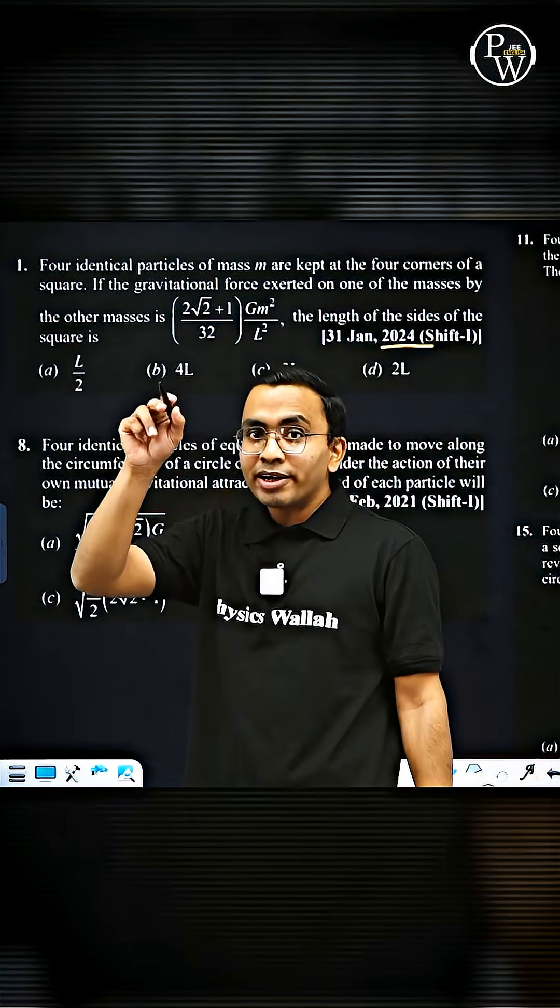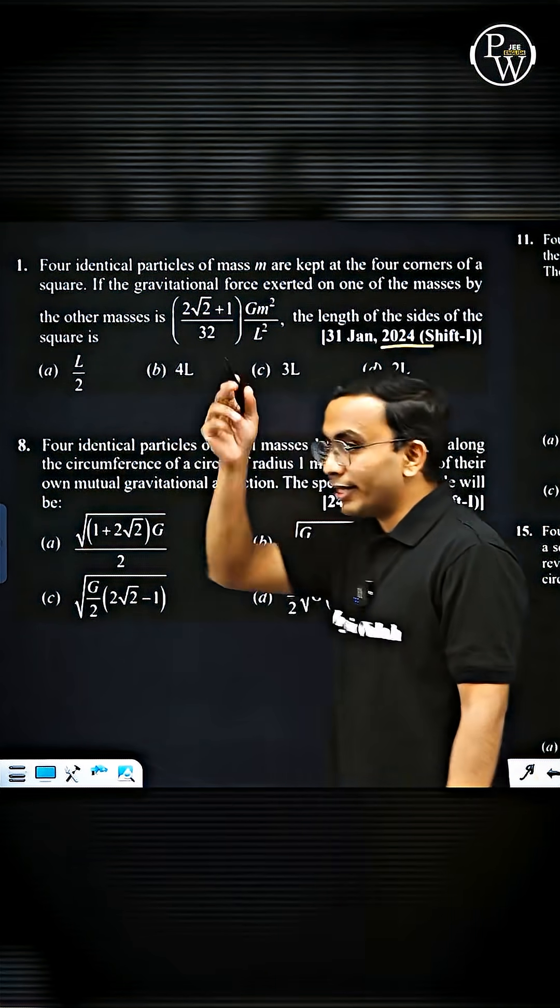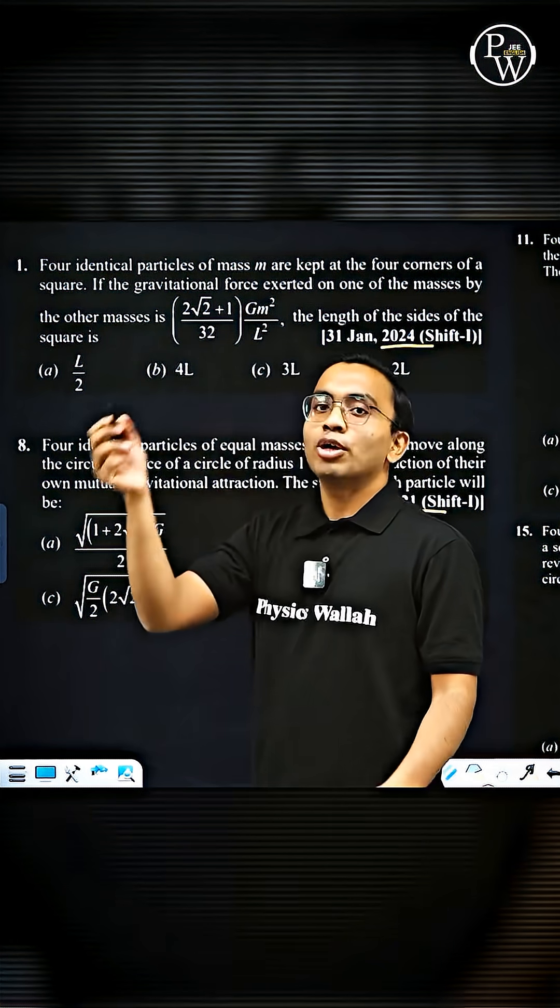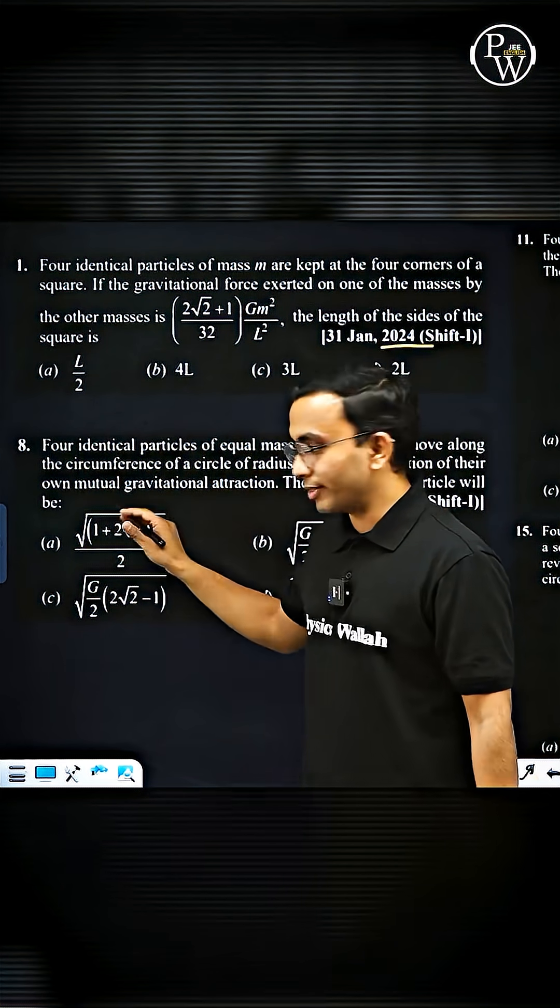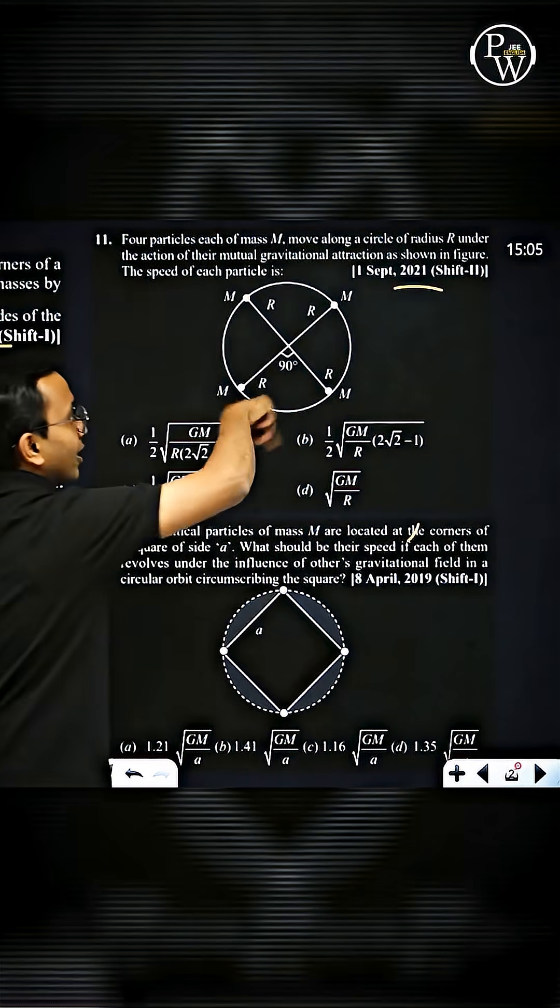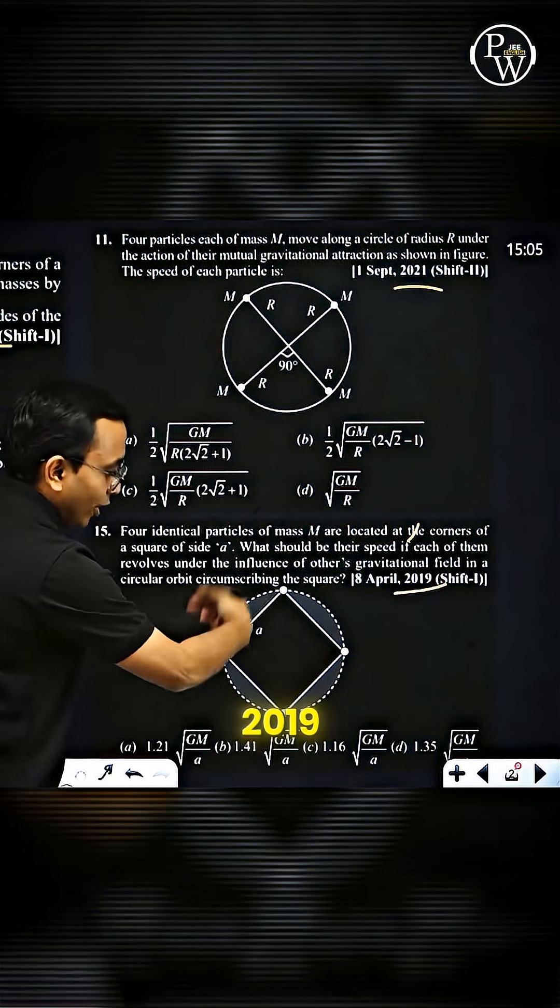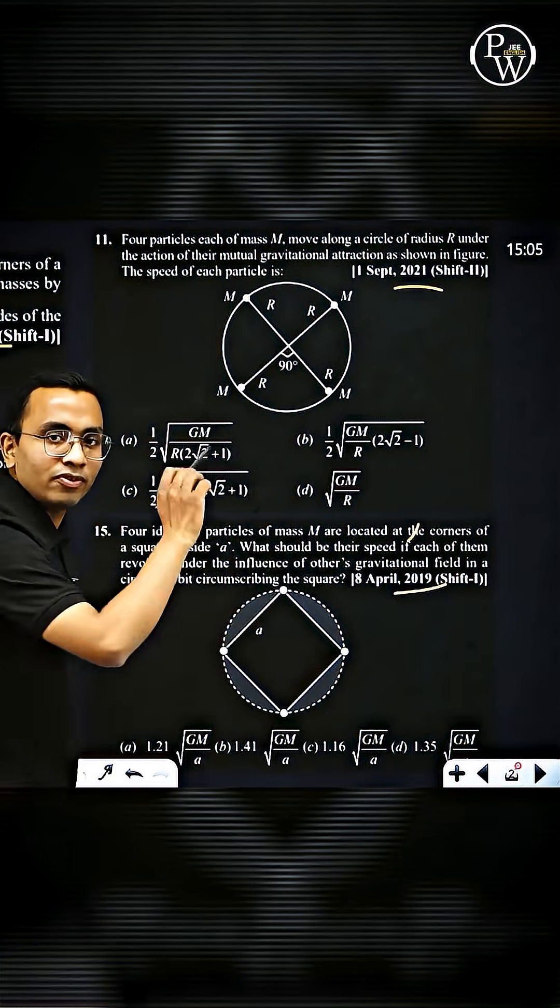2024: four identical particles on the corner of a square, find the mutual force. In 2021: four identical particles on the corner of a square moving in circle due to mutual gravitation, find the speed. Put a physics sum v square by r. 2021: four identical particles on the corner of a square, find the speed. 2019: four identical particles on the corner of a square, find their speed.